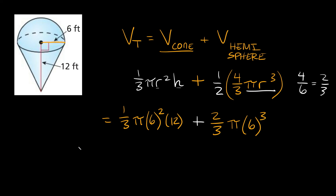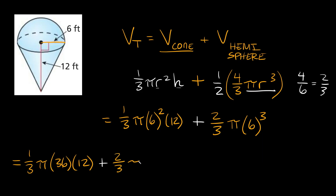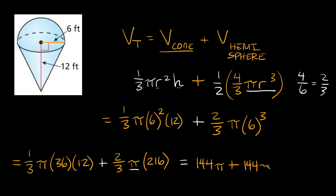Let's simplify. We have one-third times pi times 6 squared. Six squared is 36, times 12. Then we add two-thirds times pi times 6 cubed, which is 216. Simplifying: one-third times 36 times 12 equals 144, and two-thirds times 216 also equals 144. Both terms still have pi.